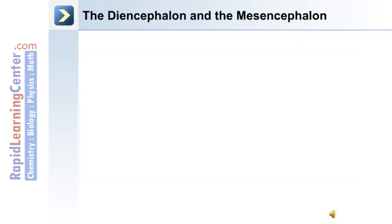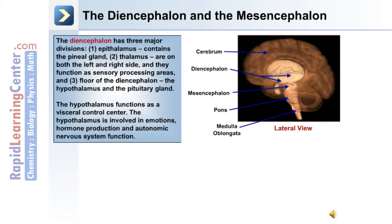The diencephalon has three major divisions: the epithalamus, the thalamus, and the floor of the diencephalon. The epithalamus contains the pineal gland. The thalamus, located on either side, functions as a sensory processing area. In the floor of the diencephalon, the hypothalamus and the pituitary gland are present.